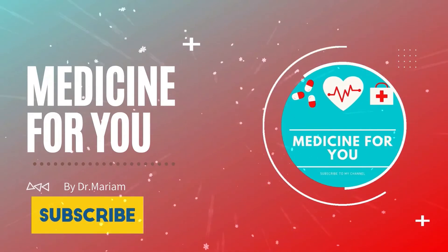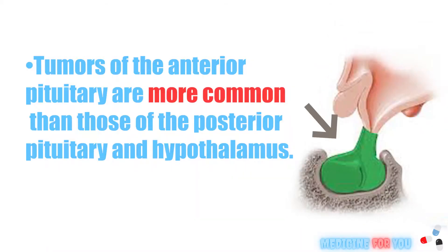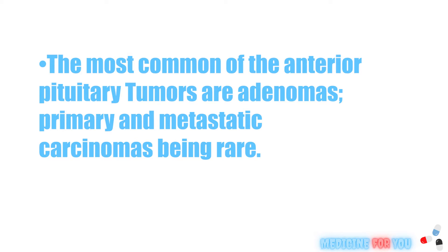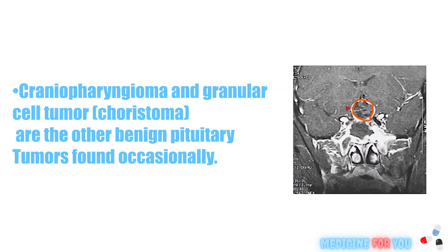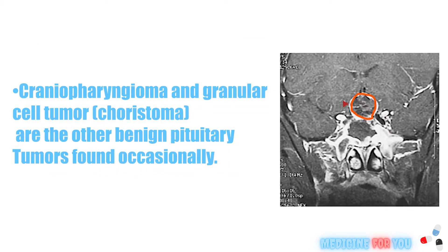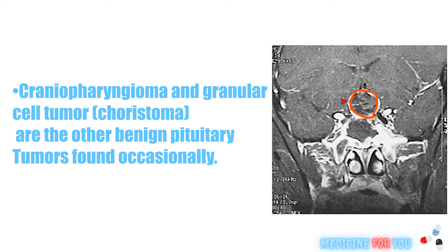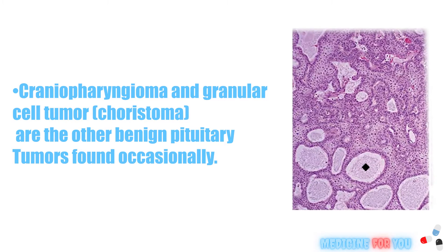Today I will talk about pituitary tumors. Tumors of the anterior pituitary are more common than those of the posterior pituitary and hypothalamus. The most common of the anterior pituitary tumors are adenomas, with primary and metastatic carcinomas being rare. Craniopharyngioma and granular cell tumor (choristoma) are the other benign pituitary tumors found occasionally.